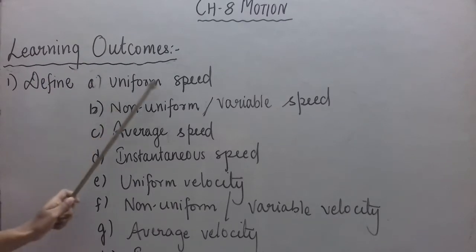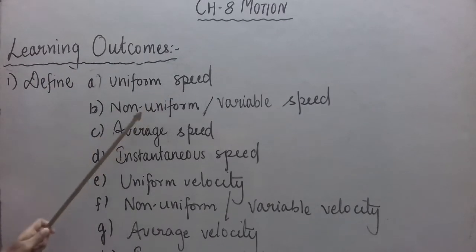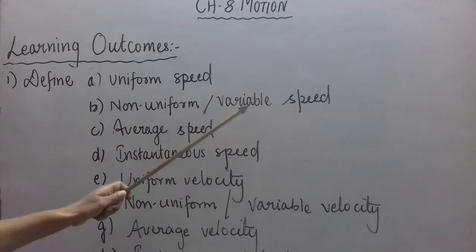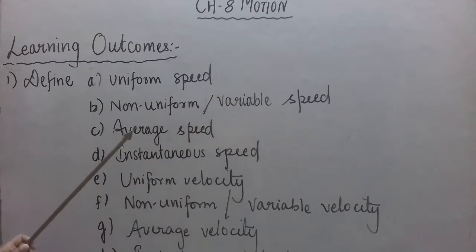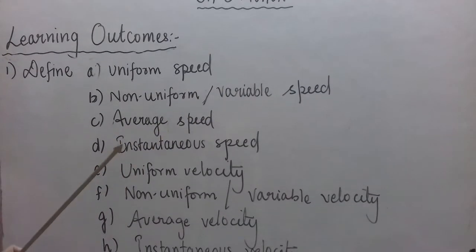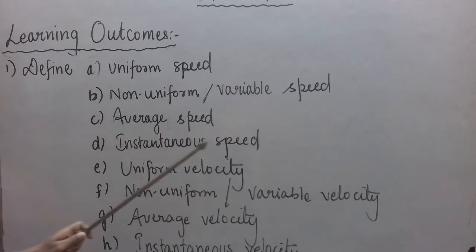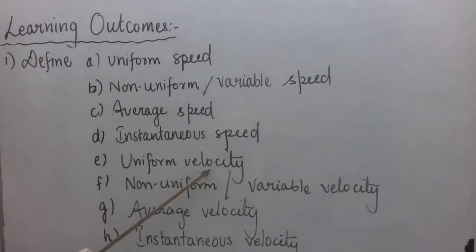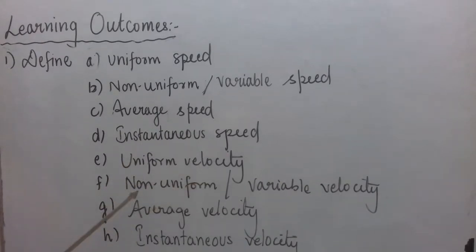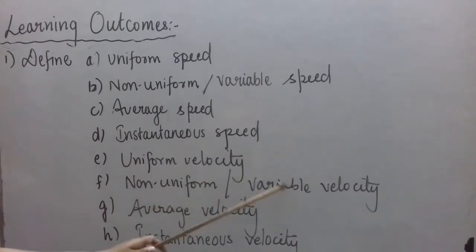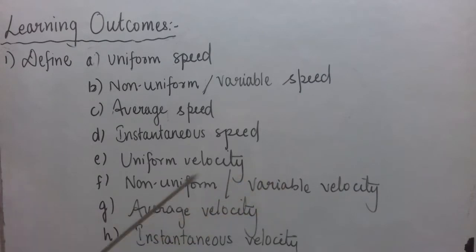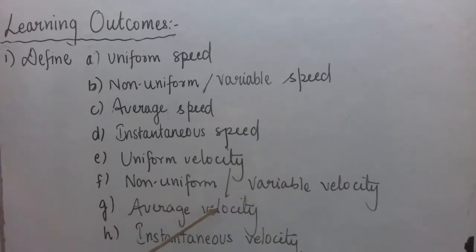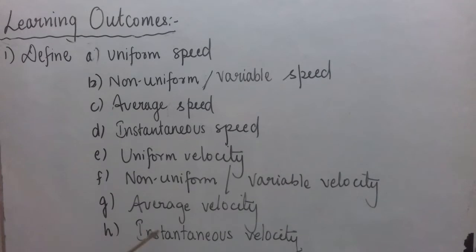Define uniform speed, non-uniform or variable speed, average speed, instantaneous speed, uniform velocity, non-uniform or variable velocity, average velocity, and instantaneous velocity.